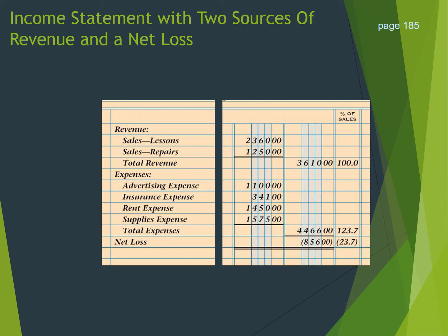Then we list our expenses as we did in the first example when we only had one revenue account. To determine our net loss, we will subtract our total expenses from our total revenue. And in parentheses, we will put $856, showing that we had a net loss. The parentheses always shows that we've had a net loss. When we did our percentage of sales, we put 100% in our total revenue. For total expenses, we took $4,466 divided by our total revenue of $3,610 and got 123.7%. The difference will be in brackets because we had a net loss of 23.7%.